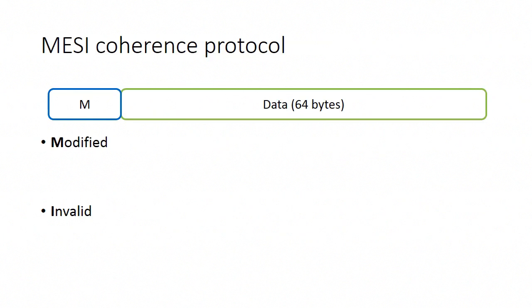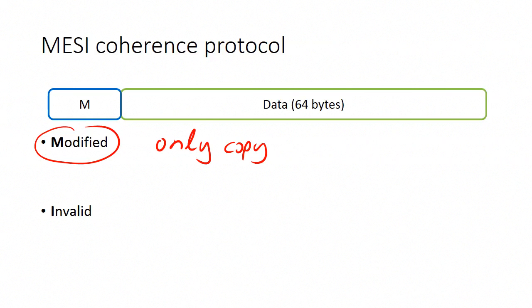The second state is the modified state. The modified state indicates that this cache line is the only copy of the data in the whole cache hierarchy, and that this copy is the only up-to-date copy, because the copy in main memory is stale since the core that holds this modified cache line has written a newer version.